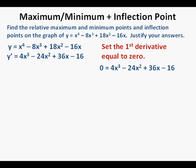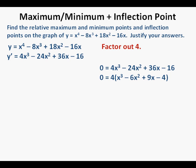Now we need to find the critical points of the function by finding where the first derivative equals 0. So we have 0 equals 4x cubed minus 24x squared plus 36x minus 16. To solve this equation we factor out a 4, giving 0 equals 4 times the quantity x cubed minus 6x squared plus 9x minus 4. Then we divide both sides by 4, giving 0 equals x cubed minus 6x squared plus 9x minus 4.